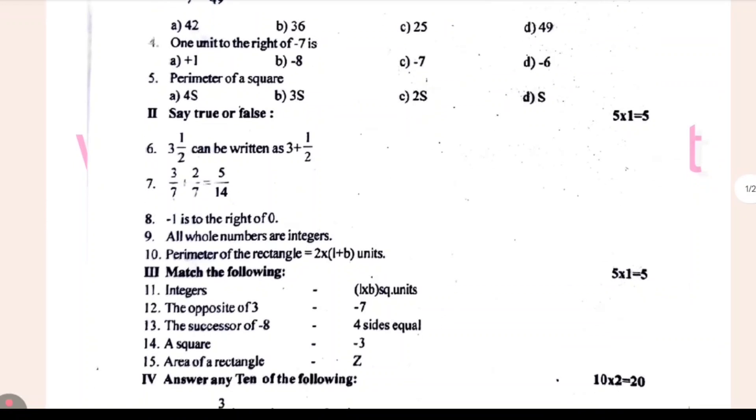Let's see the true or false. 3 and 1 divided by 2 can be written as 3 plus 1 divided by 2. 3 divided by 7 plus 2 divided by 7 is equal to 5 divided by 4. This is true or false.